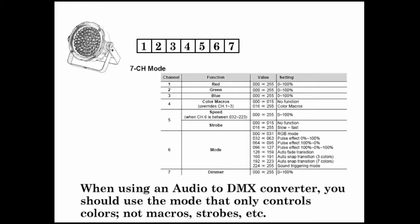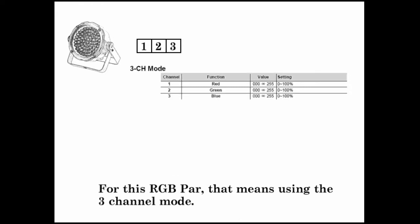When using an audio to DMX converter, you should use the mode that only controls colors, not macros, strobes, and other items. For this RGB PAR, that means using the 3 channel mode.